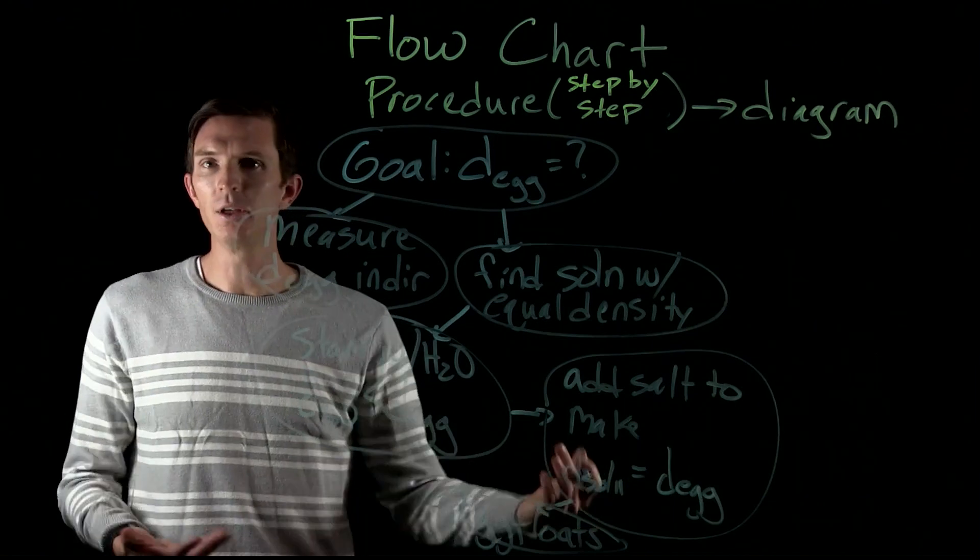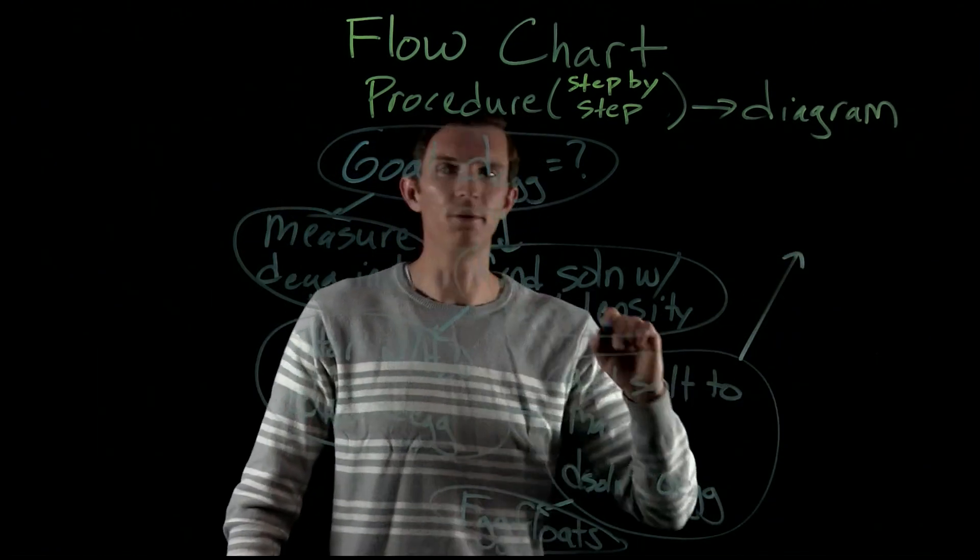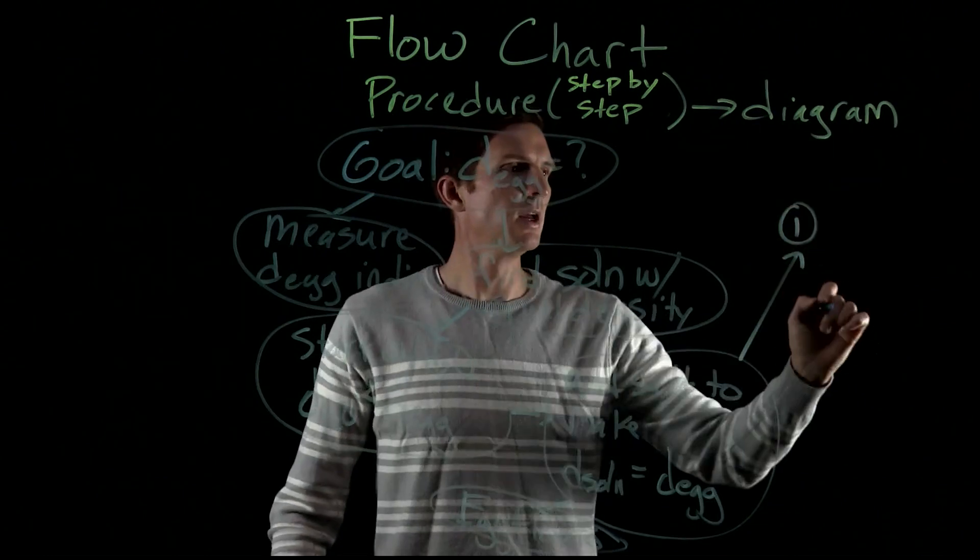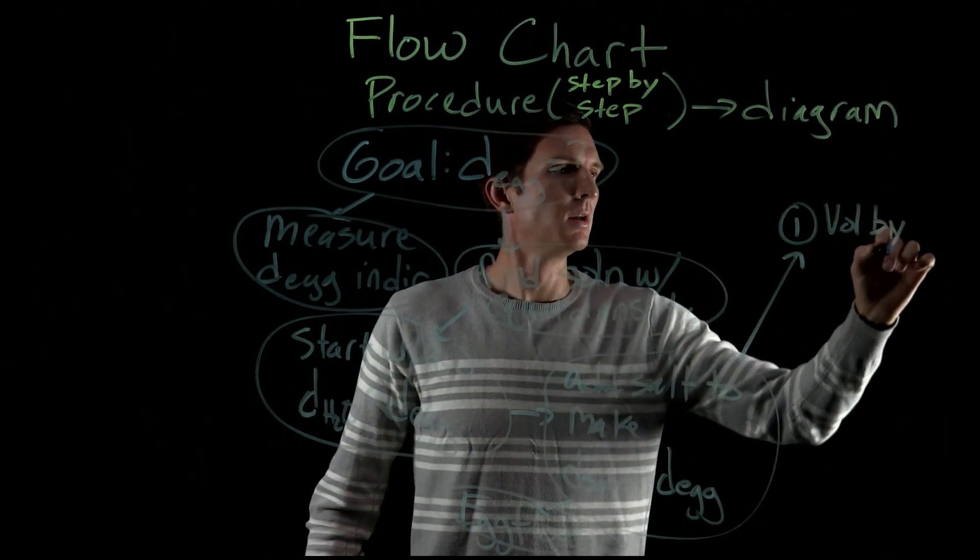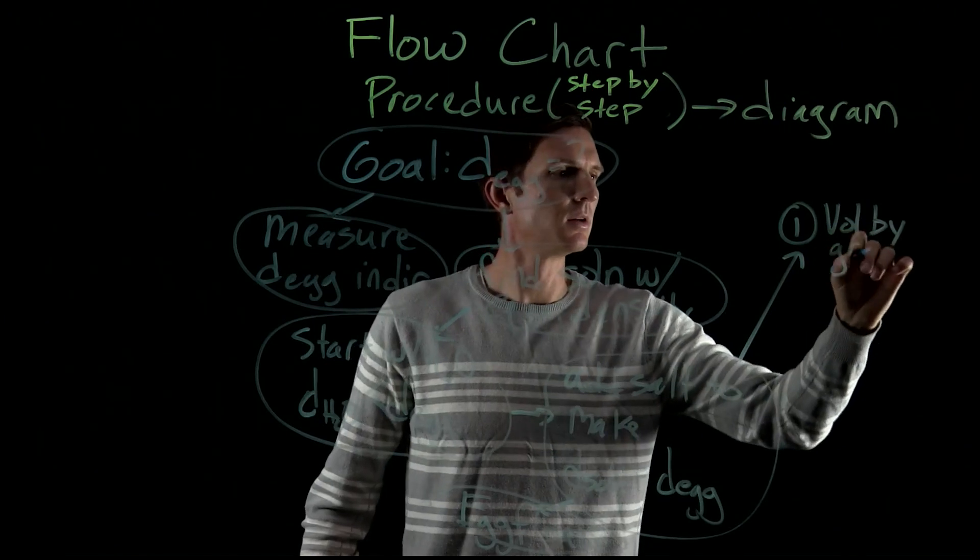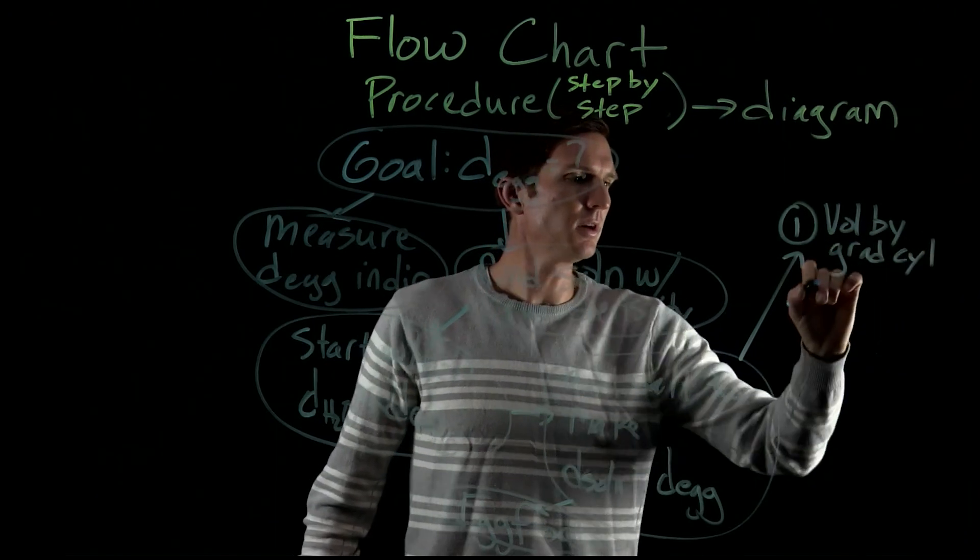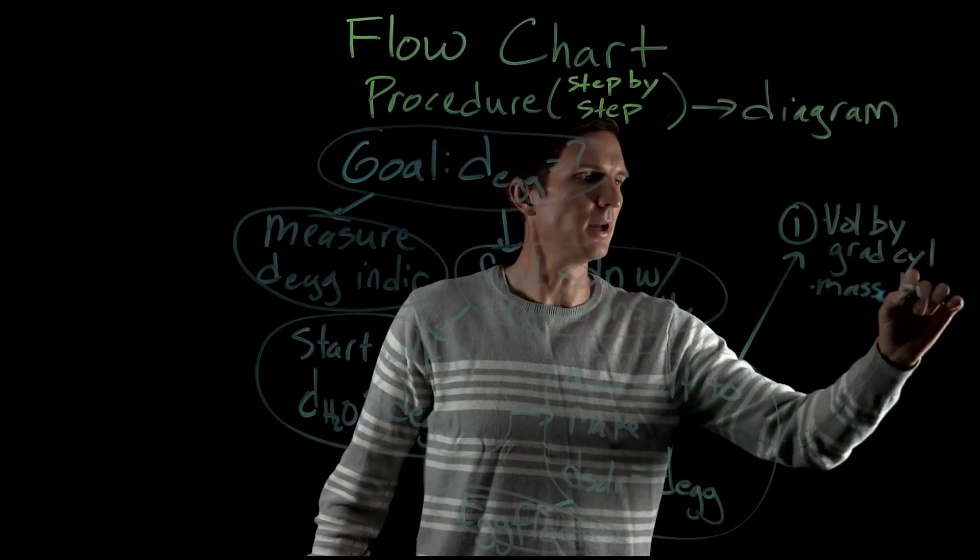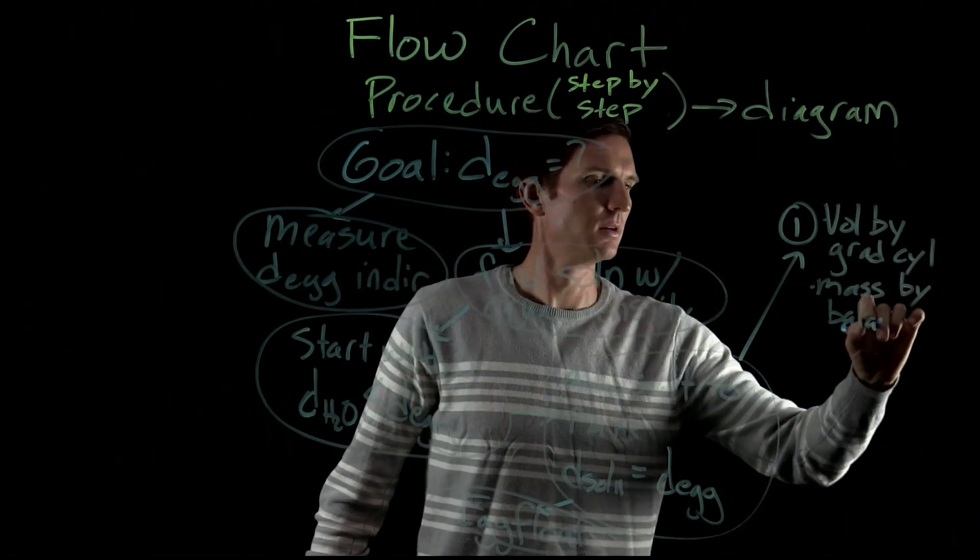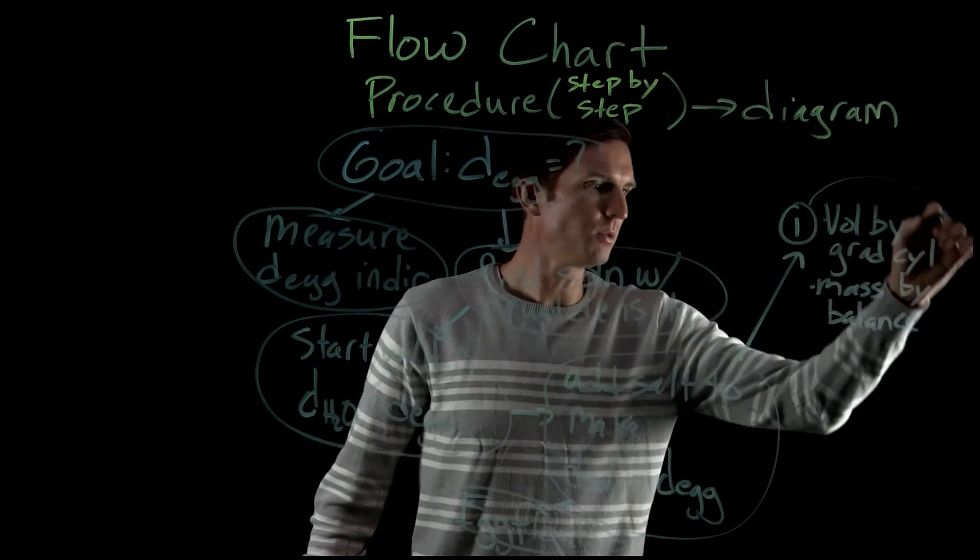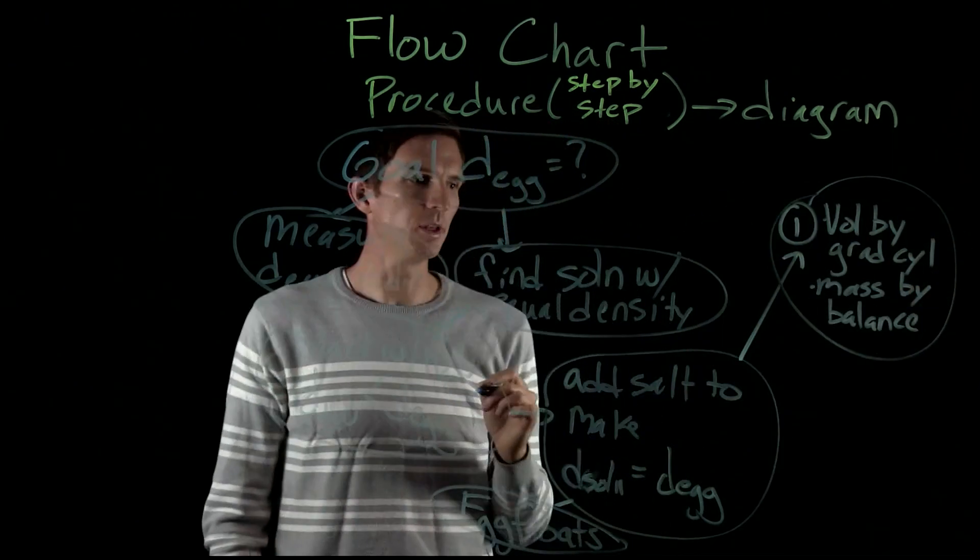Now if we have a liquid it's really easy to measure our density. We're going to do that in three different ways. One of them is we are going to find out the volume by graduated cylinder and then the mass by a balance. So that's one way that we are going to determine the density.